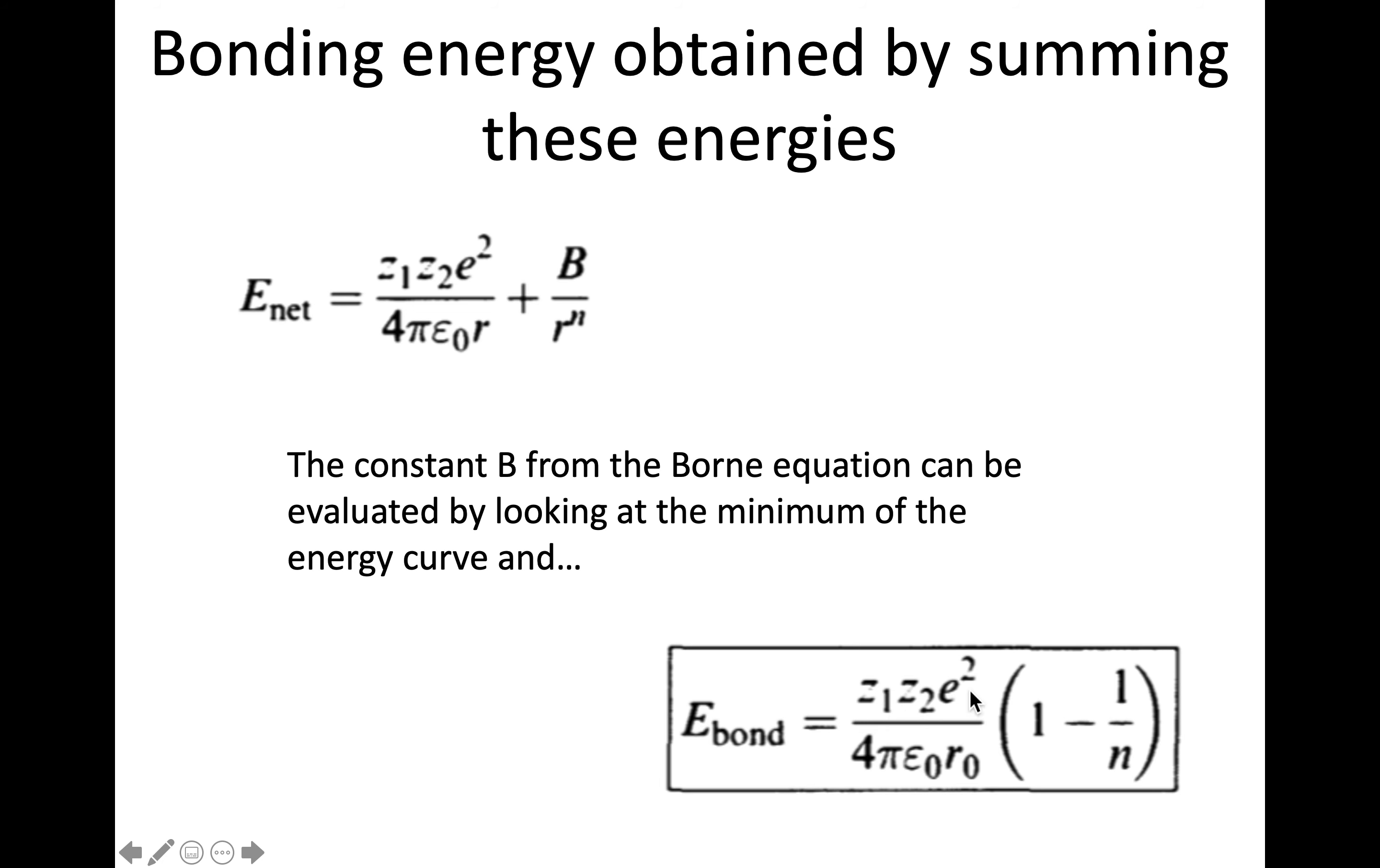So here is basically, again, charges, the charge of electron, the net charges, charge of electron constants. And then here, the R that you see up in this equation has become the equilibrium bond distance. So that's the big change between these two equations. And then we have one minus one over N, where N is that Born exponent from up here. So that's the big change where we're evaluating the equilibrium energy. And therefore, we get the equilibrium bond distance.